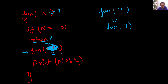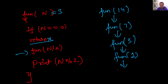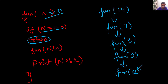At fun(3), is 3 equal to 0? No. We execute fun(n/2) — 3 divided by 2 is 1, so fun(3) calls fun(1). Similarly, fun(1) calls fun(0) because 1 divided by 2 gives 0. At this point, the value of n is 0, so the base condition is true and we execute the return statement, going back to the previously called function fun(1).